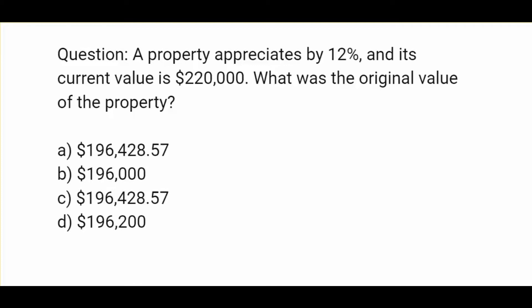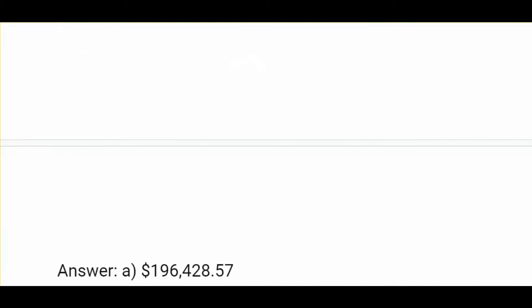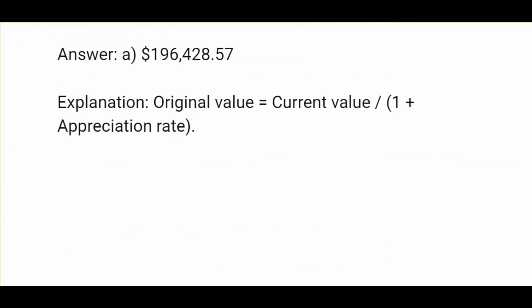A property appreciates by 12% and its current value is $220,000. What was the original value of the property? Options include $196,428.57, $196,000, and $196,200. The answer is $196,428.57. Original value equals current value divided by one plus appreciation rate.